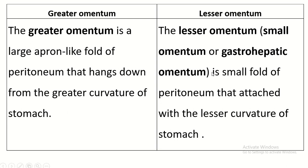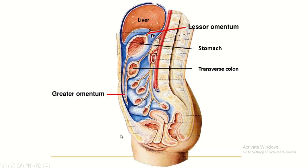The lesser omentum is a small fold of peritoneum that adjoins the lesser curvature of the stomach. This is the stomach, this is the lesser curvature, and this two-layer peritoneal fold is known as the lesser omentum.